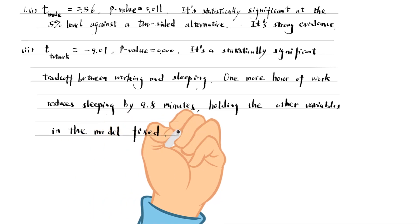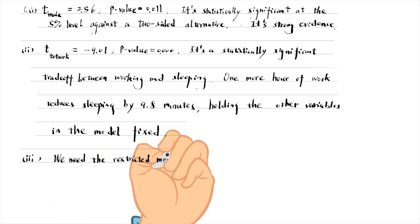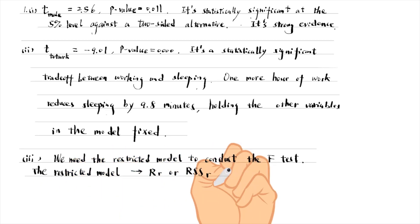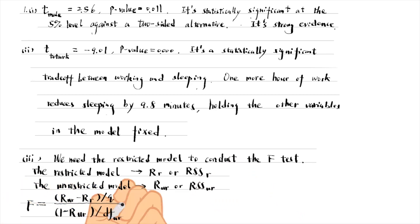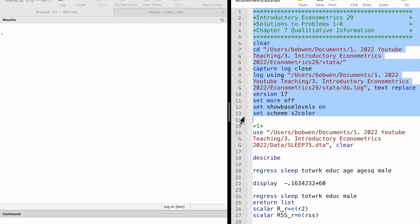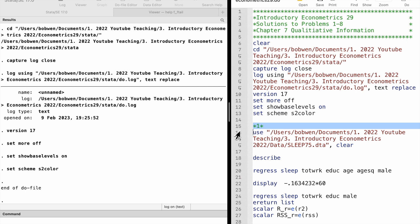For the third part, in addition to the unrestricted model, we need the restricted model to conduct the f-test. The restricted model does not contain age and its quadratic term, since the restriction is that they are zero. We can save the r-squared and the sum of squared residuals. Then we run the unrestricted model with the two age variables. We also save the r-squared and the sum of squared residuals. Next, we can use the formula to compute the f-statistics from either the r-squares or the sums of squared residuals. The r-squared form and the sum of squared residuals form of the f-statistics are the same, 1.387.